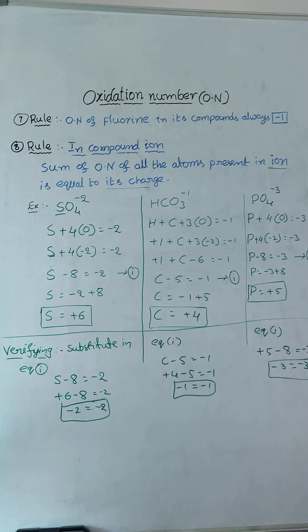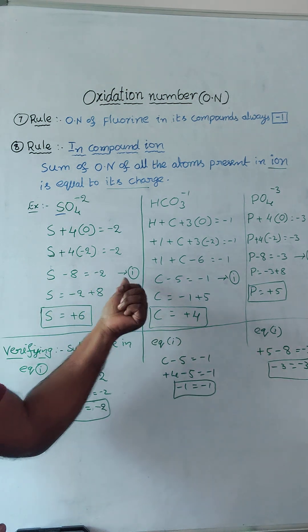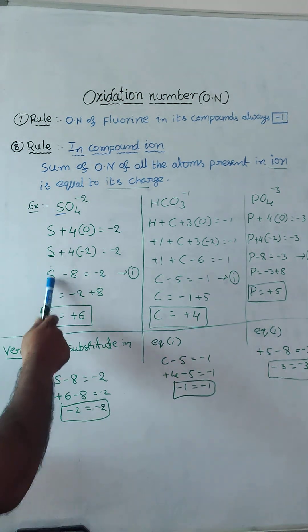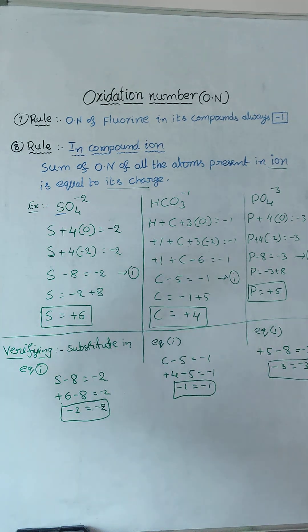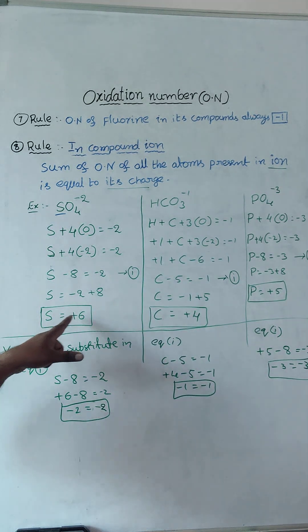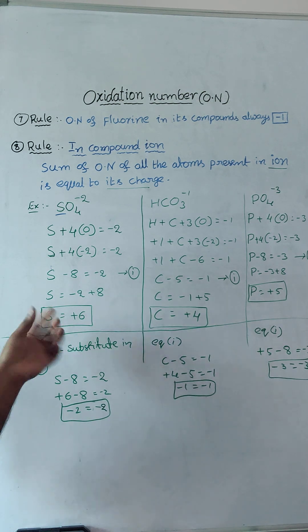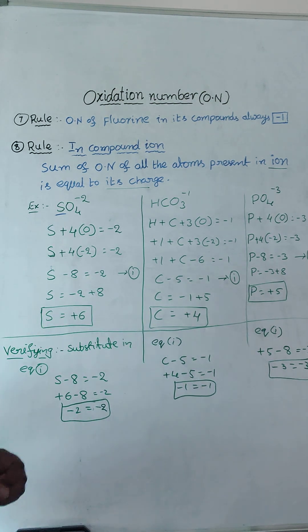See, just I consider this is equation 1. S minus 8 is equal to minus 2, equation 1. After getting the final answer, S value means sulphur value will get oxidation number plus 6.